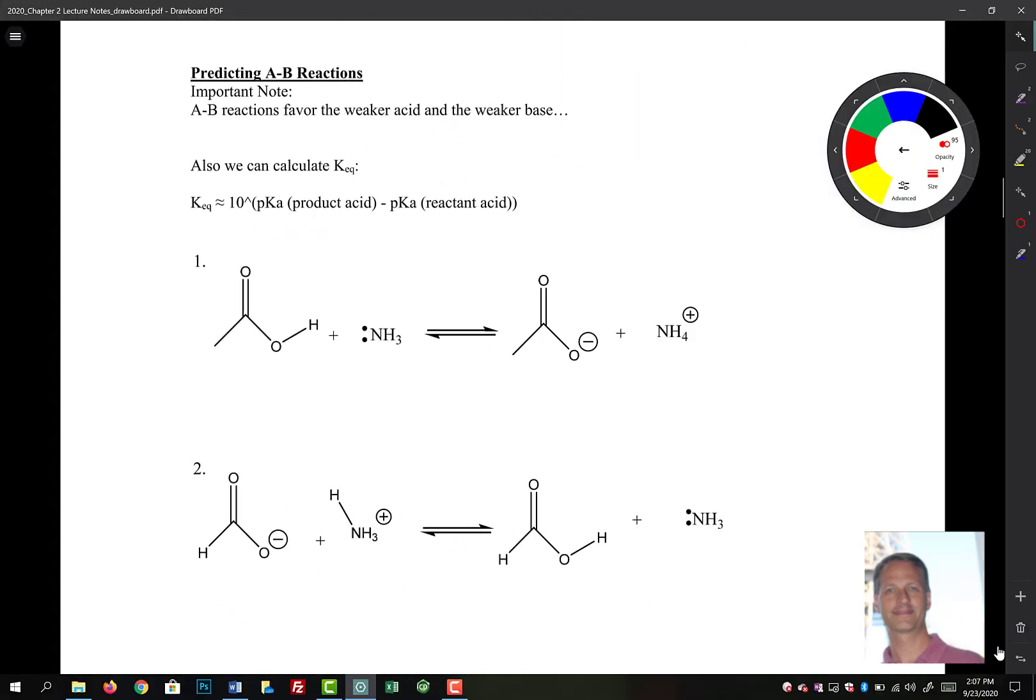Let's take a look and see how we can use these pKas in some simple acid base reactions. An important thing to point out here is that acid base reactions favor the weaker acid and the weaker base. Since we're talking about pKas, we're typically looking at acid strength here. The other thing is that we can get a pretty good estimation of Keq by taking the difference of the pKas of the product acid minus the pKas of the reactant acid. If we look down here below, we can look up these pKas. The pKa of this is 4.74, and this is an acid. The pKa of this is 9.4.